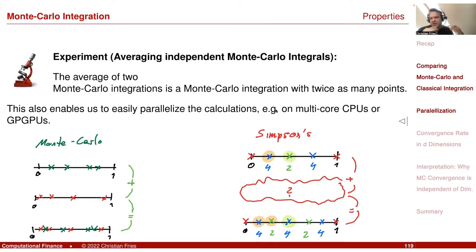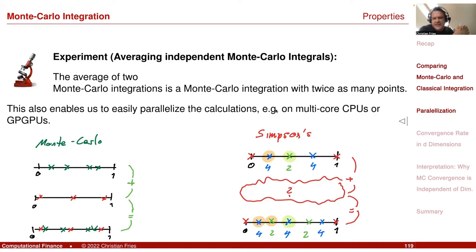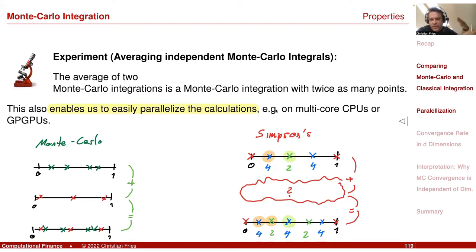So you see that this special structure is a disadvantage. For the Monte Carlo, you could just add a few more points, and it doesn't even matter that we add the same number of points — we just need to do the right averaging. That's a nice advantage of the Monte Carlo method: we can combine different simulations to create a big one, which is also nice from a programming perspective because it enables us to easily parallelize the calculations across different machines, different CPUs, or on a GPU.